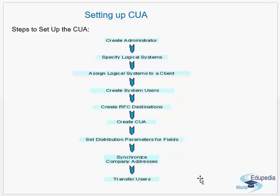In the ALE mechanism you have some partner profiles. You define the RFCs, the logical systems, and the users in those RFC destinations. You define some parameters in those partner profiles. The additional step is to synchronize the company addresses. Then transfer users. And the most important step is to create the central user administration.